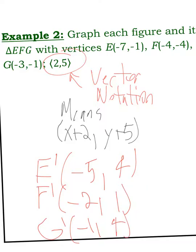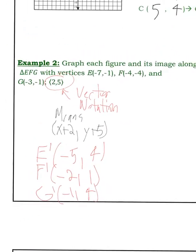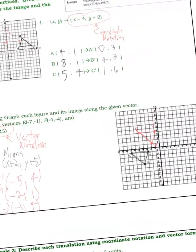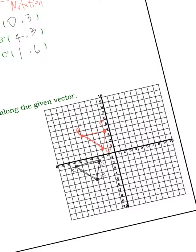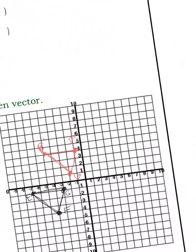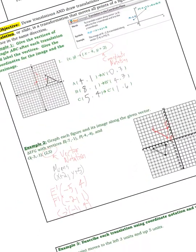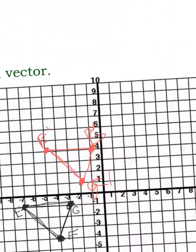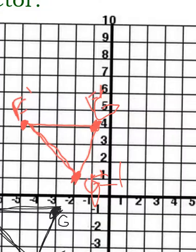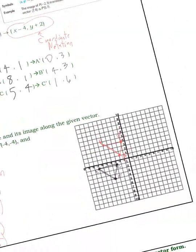And then G prime is negative 3 plus 2 is negative 1. And then negative 1 plus 5 is 4. So here I have that graphed ahead of time. You'll see E prime is at negative 5, 4. And G prime is negative 1, 4. I got my letters backwards. This one's G. That one's F. And then F should be at negative 2, 1. So yeah, negative 2, 1. It's the F. I labeled all the points a little backwards, but not a big deal.